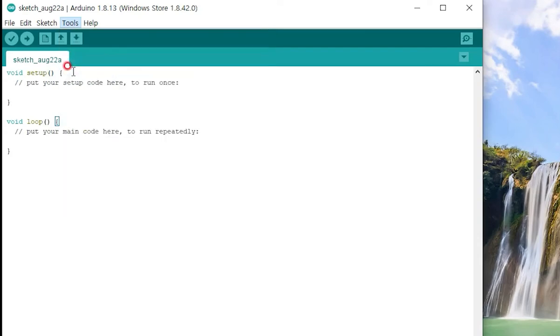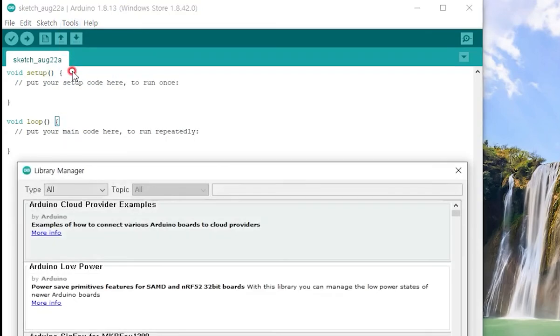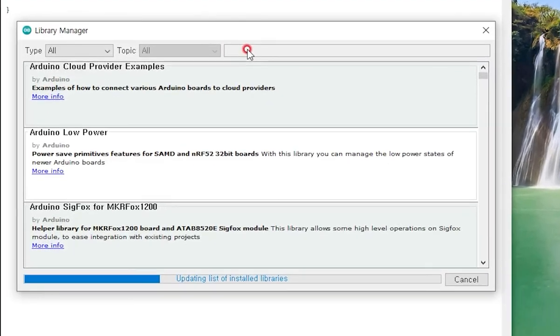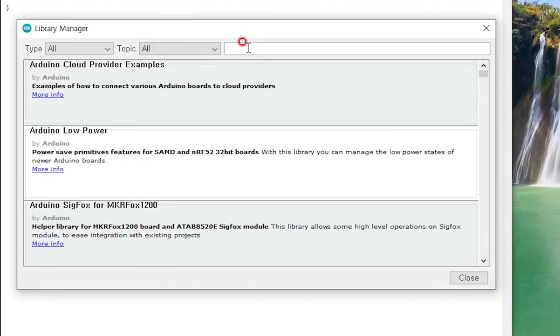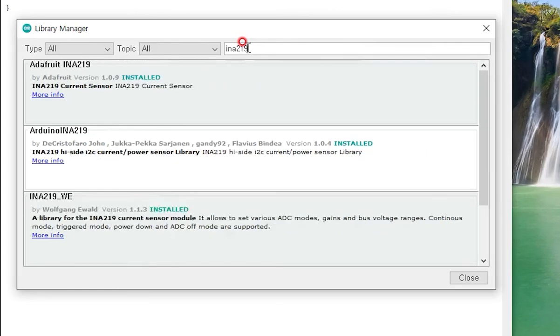So click the Manage Libraries under the Tools menu, and type INA219 then press Enter. You will see there are several libraries you can install, but the one we're using is the topmost one, from Adafruit. Click the Install button to install, and you may see a pop-up telling you there are dependencies to this library, so install them as well, and then close.